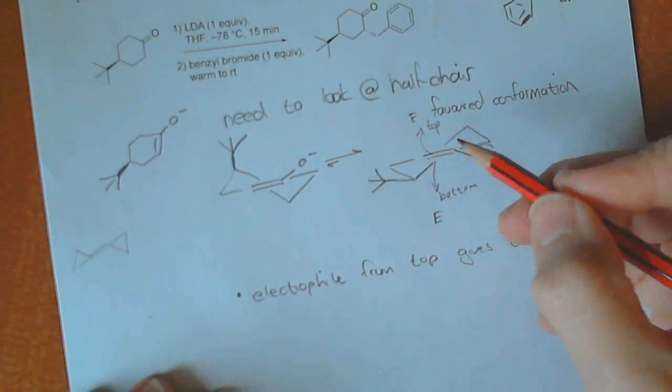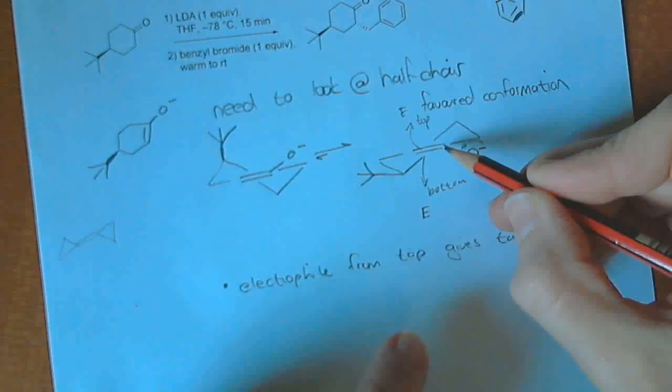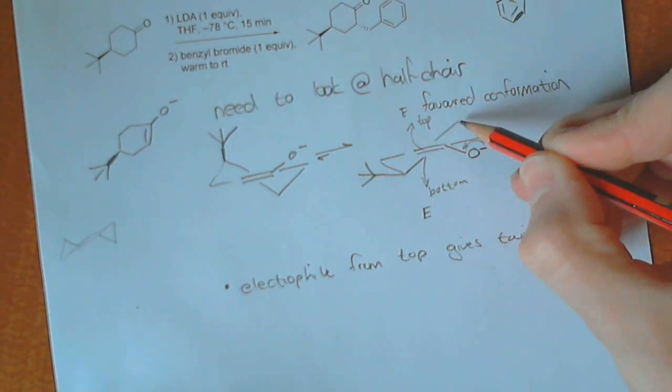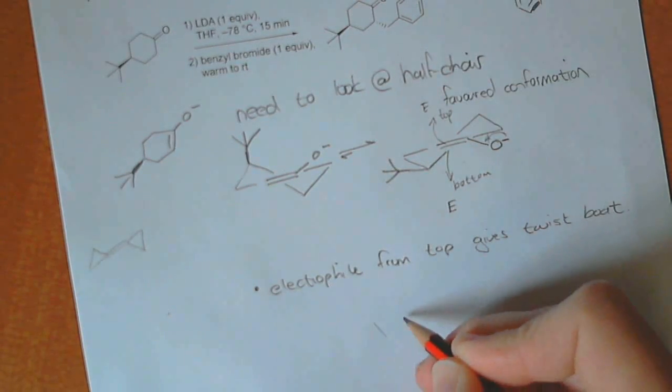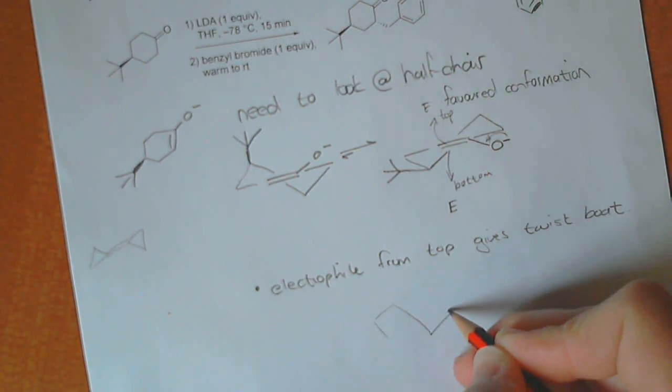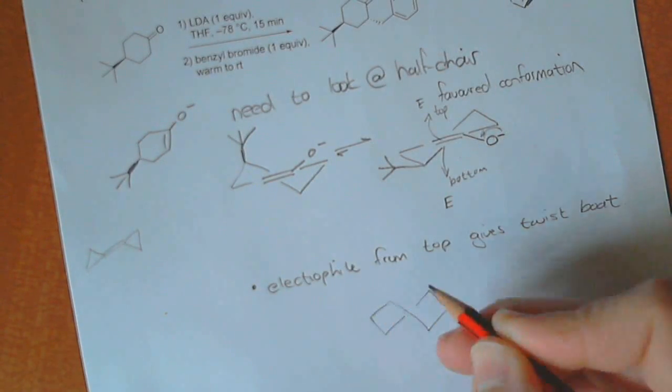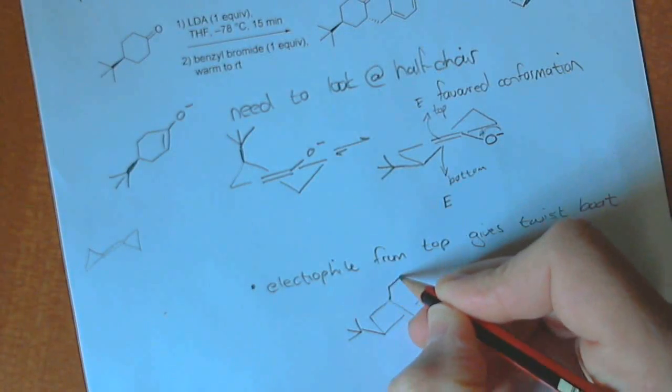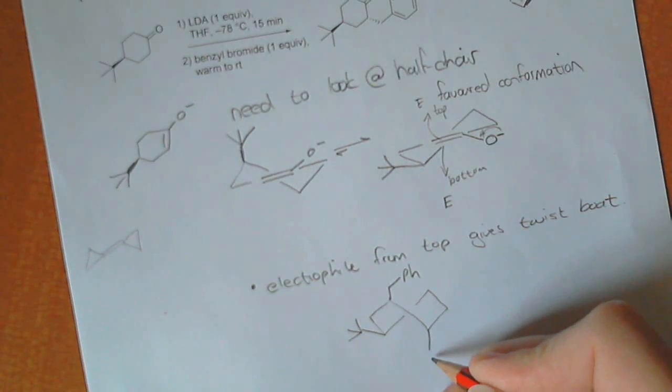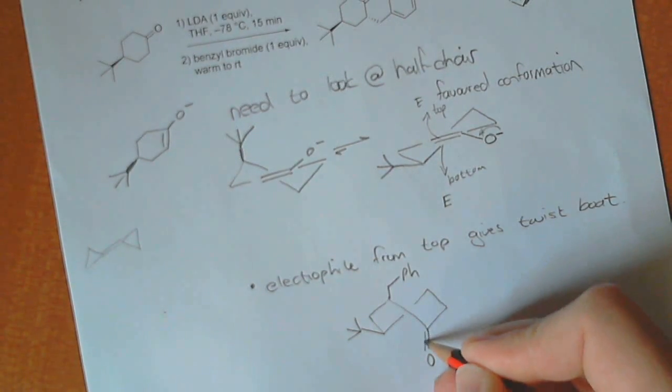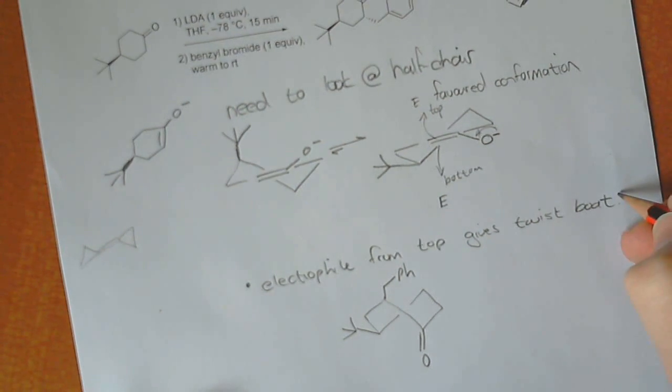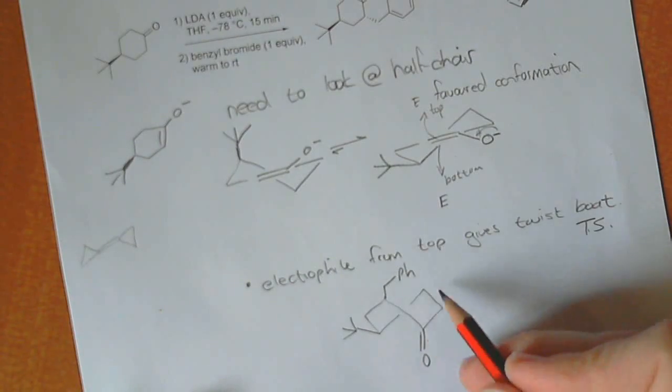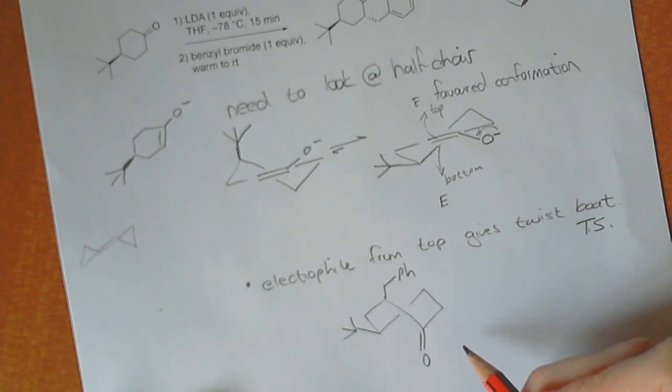All right, because if it comes in from the top, this whole thing is going to swing around like that. So this line becomes more in this sort of angle here, which means it's not running parallel to that. And then you can try and draw out that twist boat, which will look something like this. I find that this is an easier one to draw out than the twist chair. The t-butyl is still in the same position over here. This is where the benzyl group is coming in over there, and this is where the oxygen is, and it'll end up being something like that. It's the twist boat transition state, a TS. It's not twist boat conformation, so to speak, because it's a transition state that it goes through.